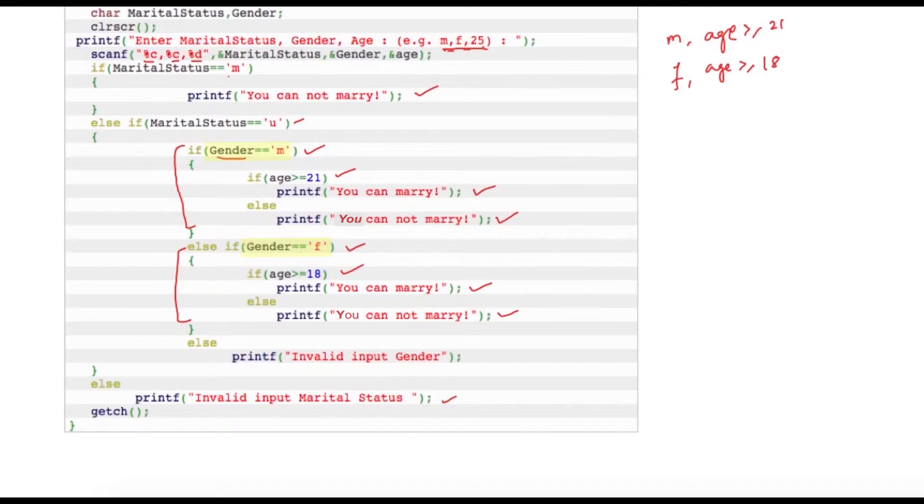So we are just going to print 'invalid input gender.' Maybe he can just retry execution and check the program again. Similarly, if he or she has entered some invalid character instead of M or U, we can display 'invalid input marital status.'